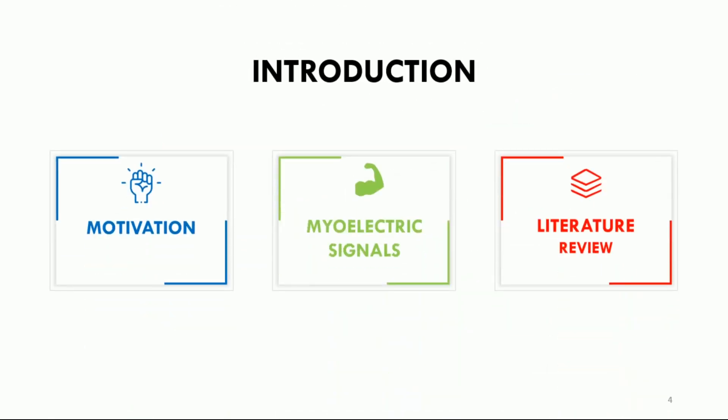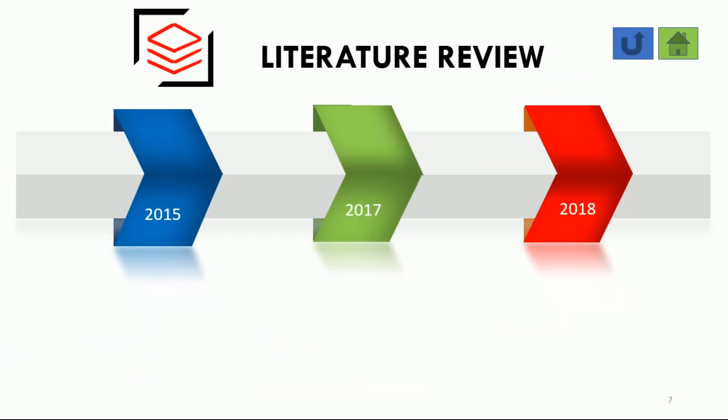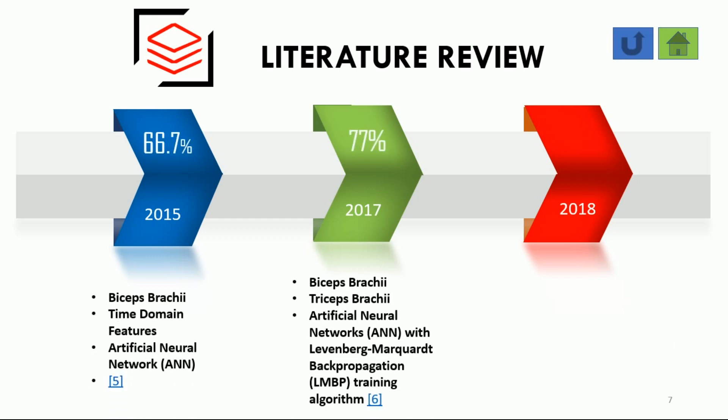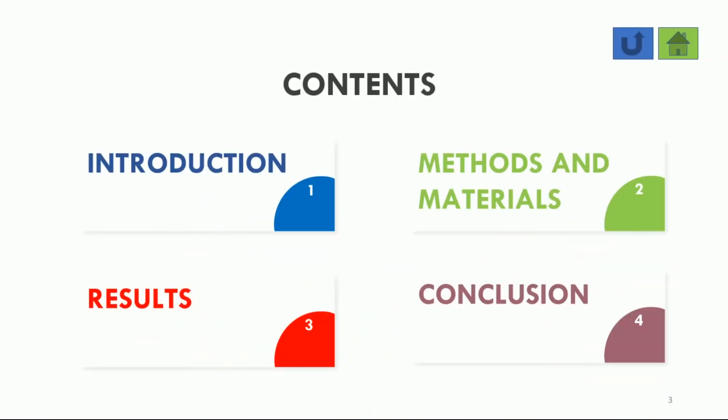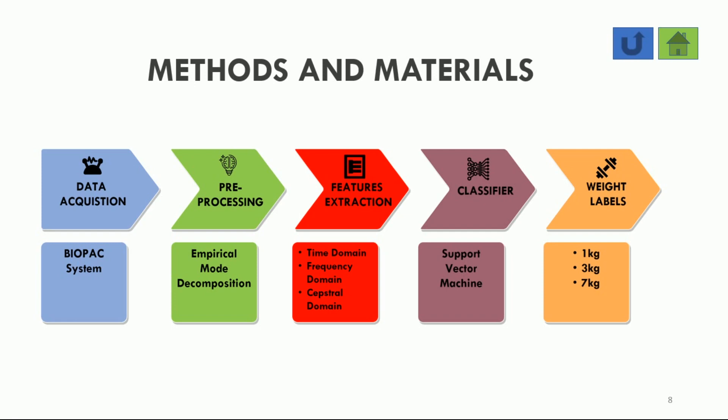Previous research work that has been done in this domain is shown. M.H. Charlie used biceps muscles and gained accuracy of 66.7% with time domain features and artificial neural network as classifier. Same arm muscles were used by DTOTA in 2017 and accuracy obtained was 77% with ANN. In 2019, muscle activity of back muscles was used in load classification and accuracy obtained was 81% with time domain features and multinomial logistic regression technique. This is the block diagram which includes the steps that were followed to get results in this research work.